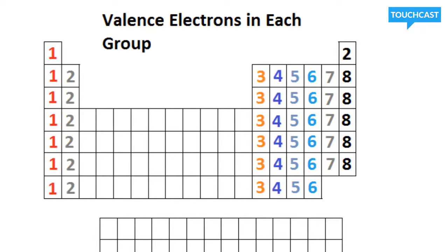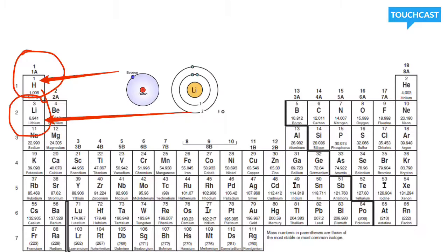Alright, let's go ahead and look at a couple models of this. Now, if you look here, these are basically a Bohr model of hydrogen and lithium. They are both in group 1. And if you notice, they both have only one valence electron.